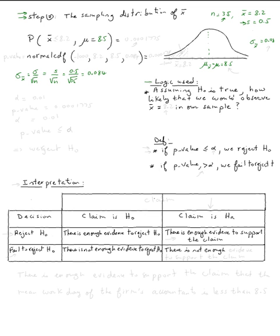The logic is: assuming h sub zero is true, how likely is it that we would observe x bar equal 8.2 in our sample? We want to know if x bar equal 8.2 is likely or very unlikely. We need to calculate the probability of x bar being 8.2 or less — that area under the curve.